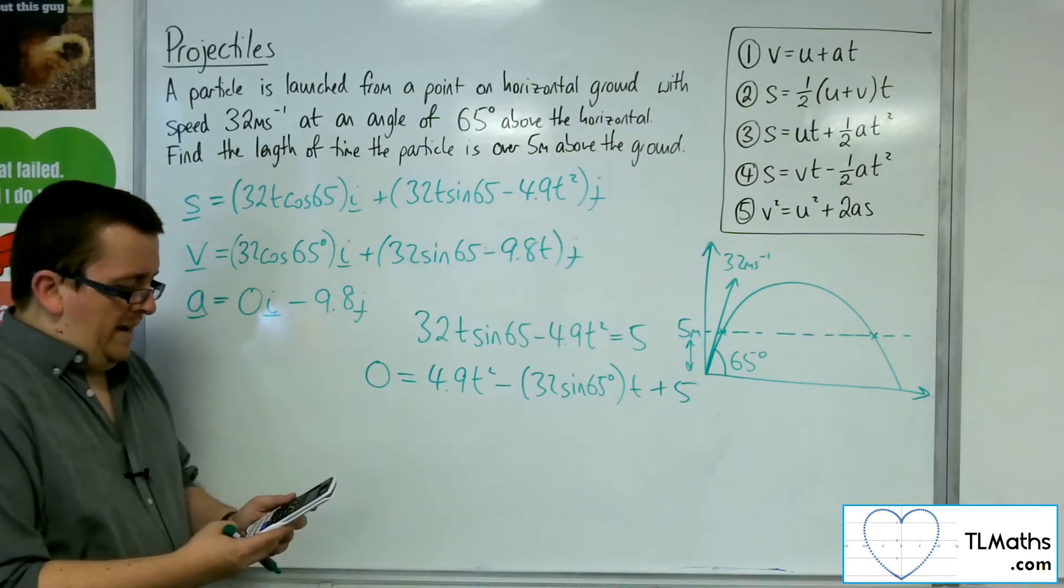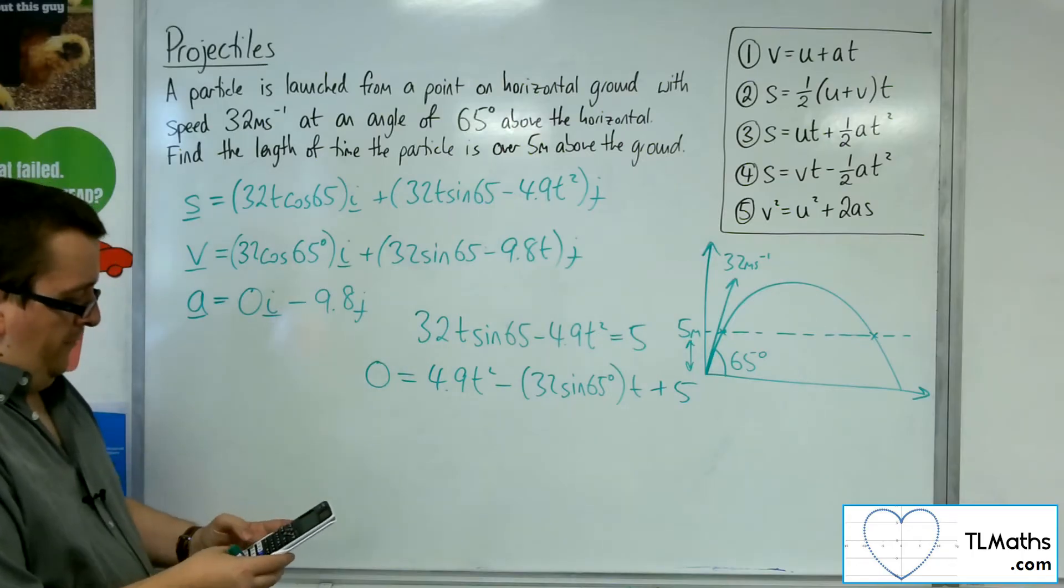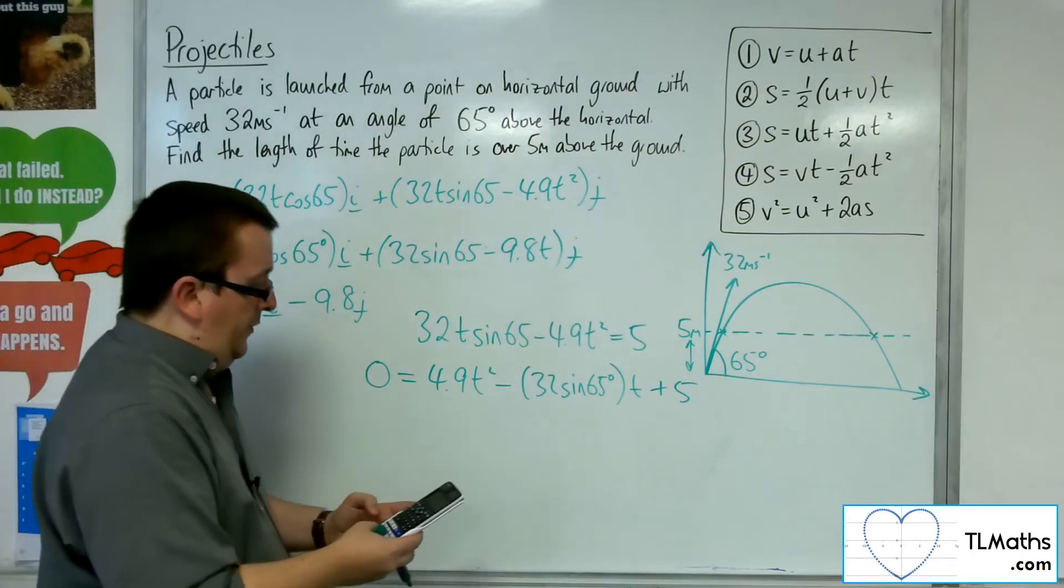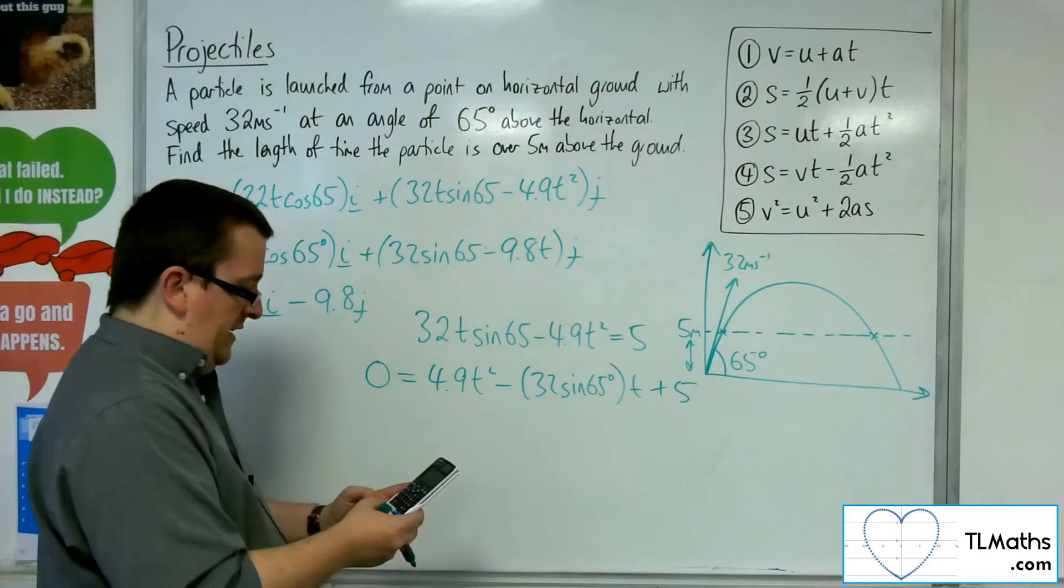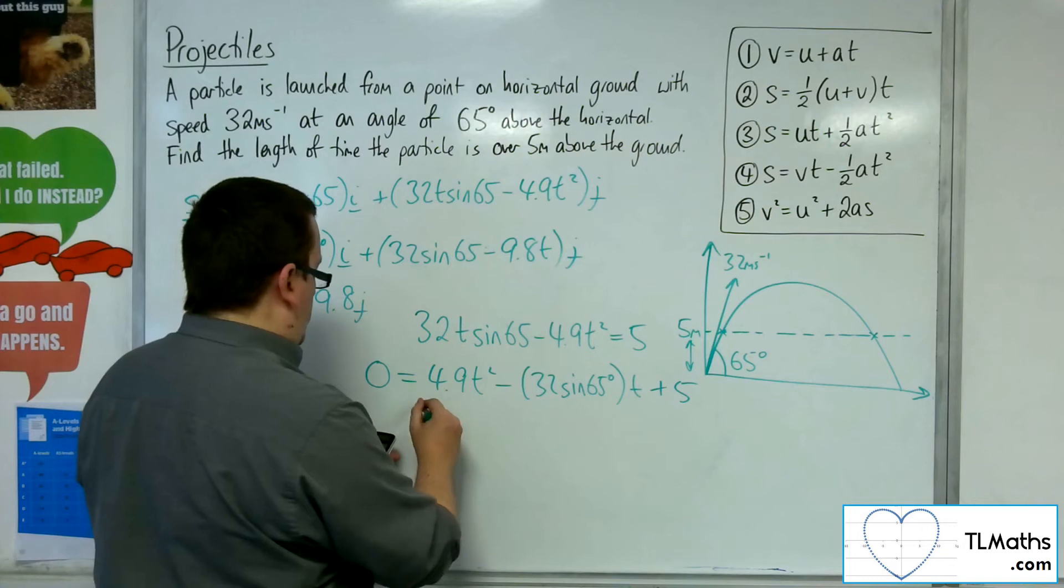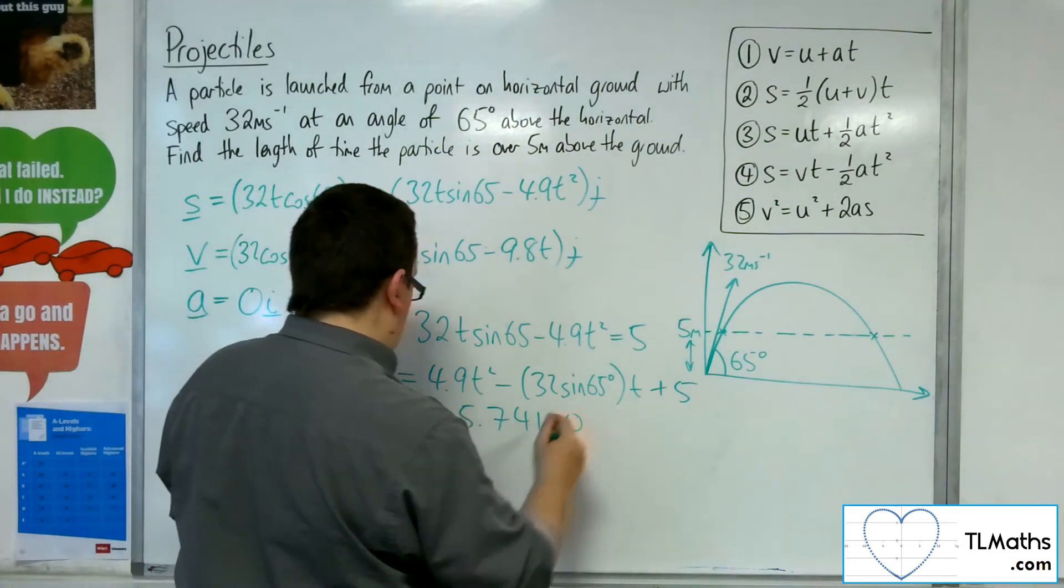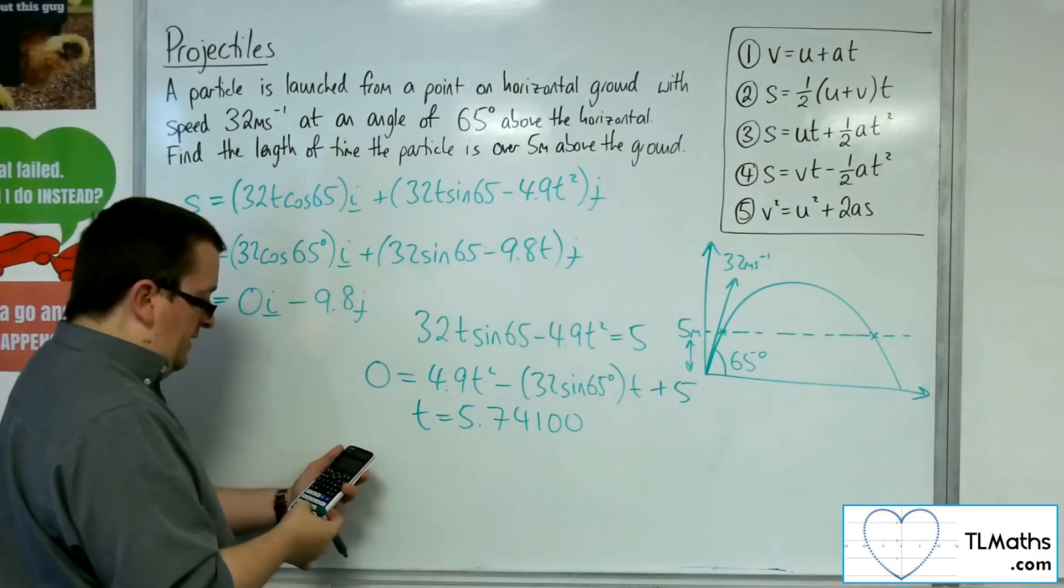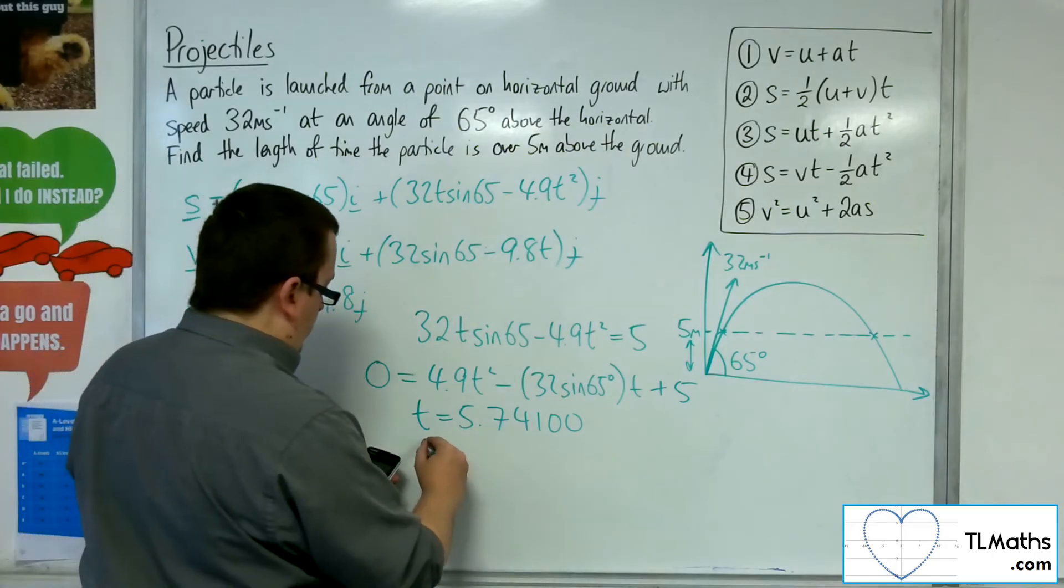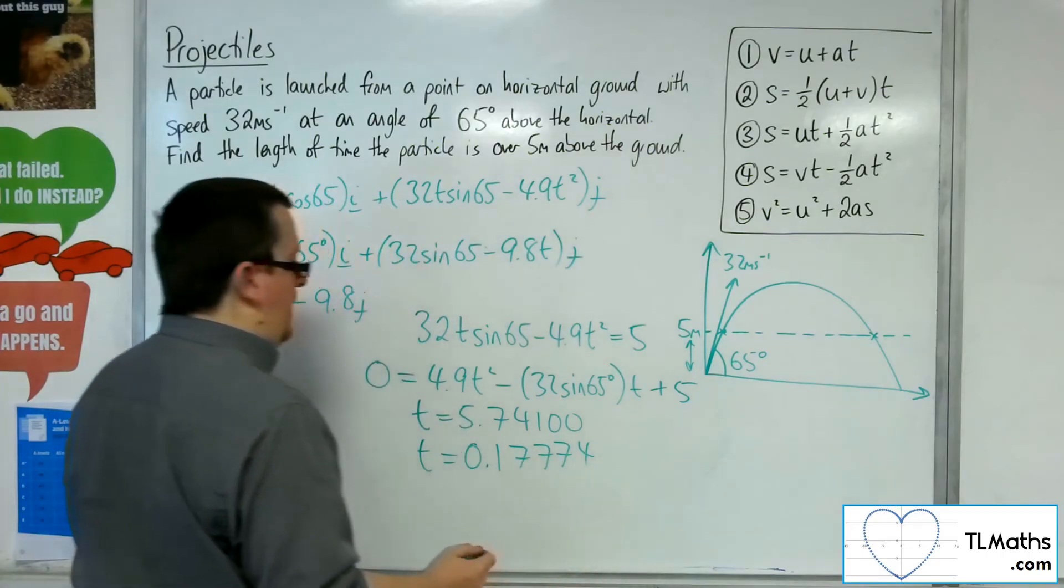Okay, so menu and then a, polynomial and then degree 2. So we've got the 4.9 minus 32 times sine of 65 degrees, and then we've got 5. And so we've got two values for t, 5.74100. I'm going to write them out to 5 decimal places, so I've got enough space for this. And then t is 0.17774.